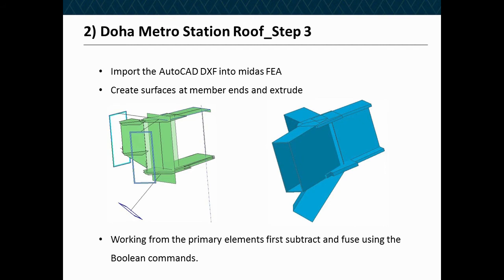Once we're in FEA, we create a series of surfaces from the rationalized line data extracted from the MIDAS Civil model. Being very careful — and I'll mention some top tips for solid modeling in a moment — we ultimately extrude those surfaces to create three-dimensional shapes. We then use the Boolean subtract and fuse commands within MIDAS FEA to give ourselves a single entity volume that we can then mesh.